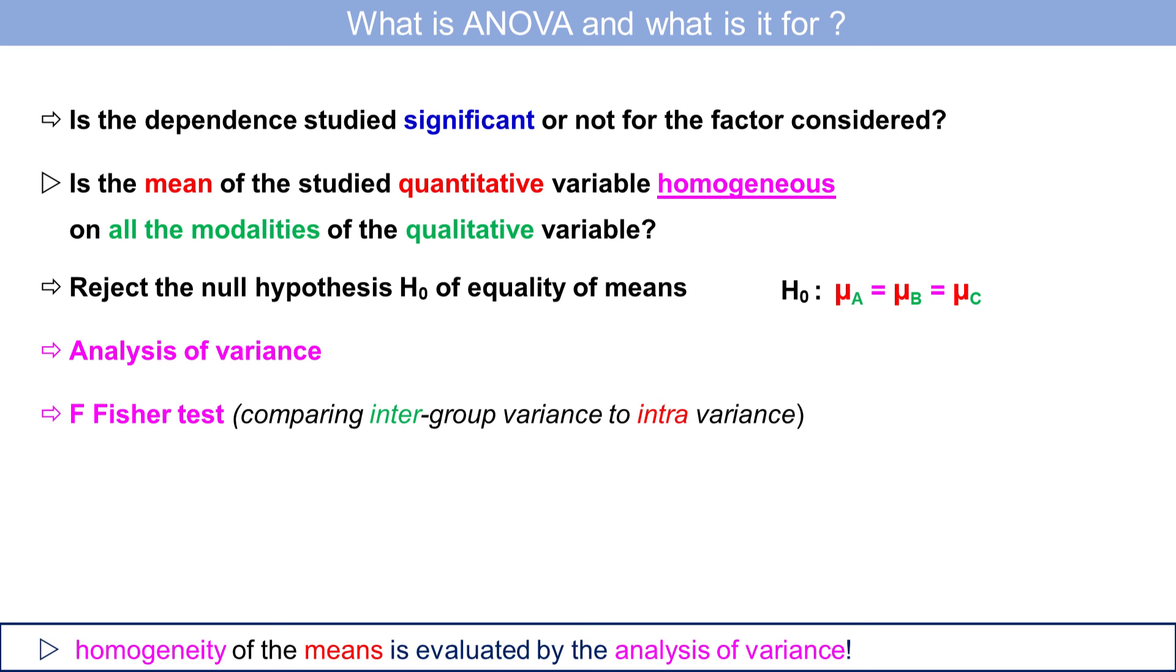For the more curious among you, this allows us to compare the inter-sample variance with the intra-sample variance. The ratio of these two variances would have to deviate quite a lot from one for the null hypothesis to be rejected.